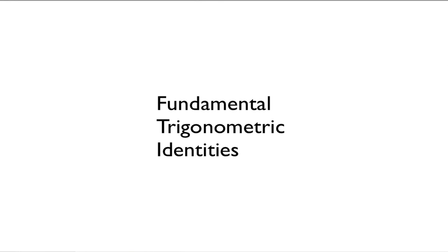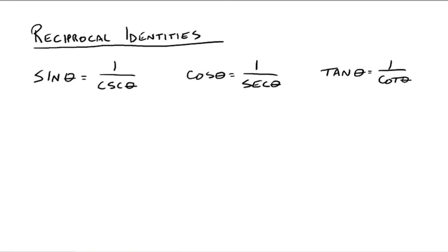This video is going to introduce us to some fundamental trigonometric identities. The first ones we're going to talk about are the reciprocal identities. We already talked about how sine theta and cosecant theta, by their definitions, are defined to be reciprocals of each other. Same with cosine and secant, and tangent and cotangent.